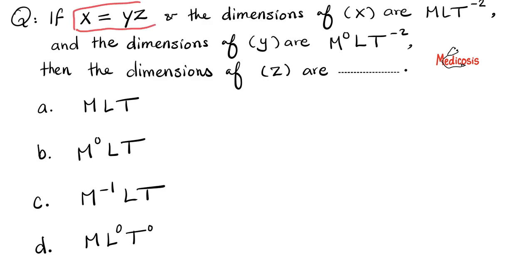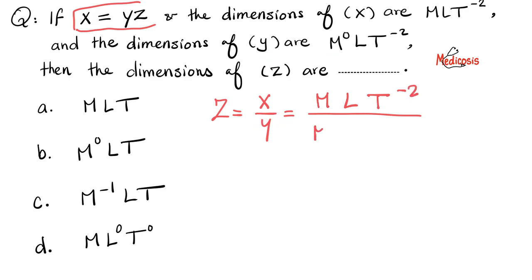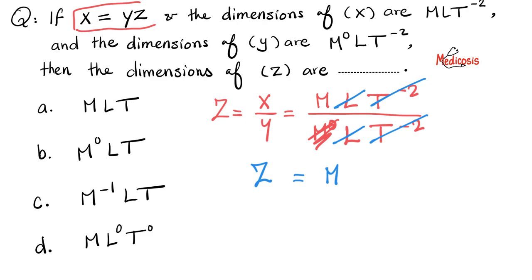Let's rearrange this equation. If x equals y times z, then z equals x divided by y. And x is measured in units of M times L times T to the negative second power, and y is measured in M to the power 0 — which is basically 1, so you can remove it — multiplied by L multiplied by T to the power negative 2. Then we cancel T to the negative 2 with T to the negative 2, cancel the L with the L, and the end result is just M. So z is measured in M — everything else is raised to a power of 0, so the correct answer is choice D.